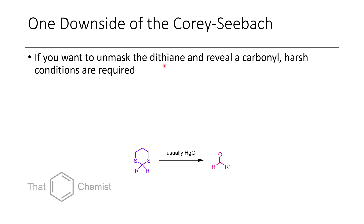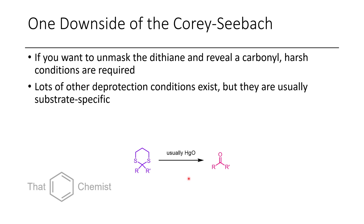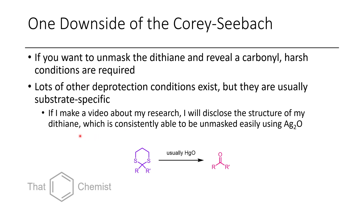The downside of Corey-Seebach is that the dithiane usually has to be unmasked using mercury salts. Other additives like silver or N-bromosuccinimide can cause undesired side products, making it hard to unmask with silver or other oxidants. Mercury salts are toxic. If this video gets 150 likes, I'll make a video about my research disclosing my dithiane analog, which can actually be unmasked just using fresh silver oxide — much easier.